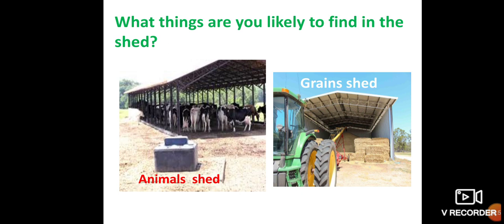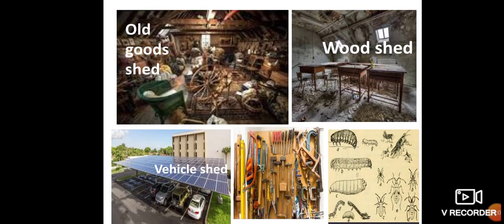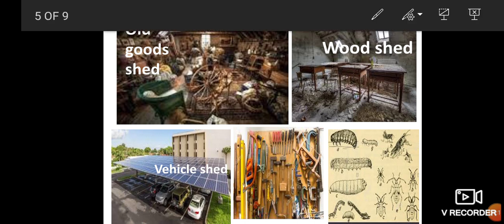What things are you likely to find in the shed? Animal shed, grain shed, old goods shed, wood shed, vehicle shed, tool shed, and insects — these can all be stored in the shed.